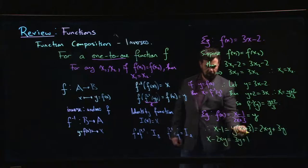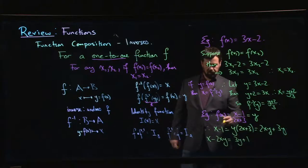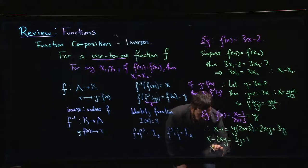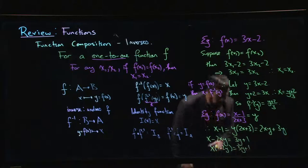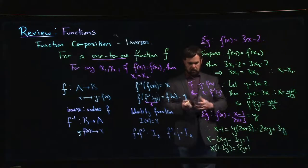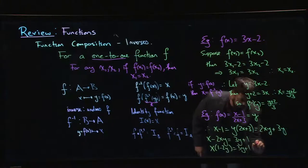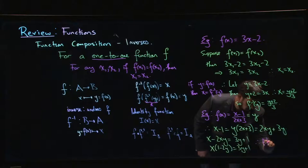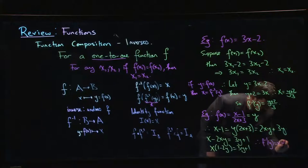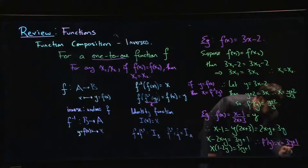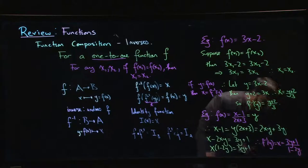Okay. So I want to solve for x. Next thing I should do is I should factor an x out from this left-hand side. x times 1 minus 2y is 3y plus 1. And so if I want to solve for x, I just have to divide by 1 minus 2y. So f inverse of y, which is x, is 3y plus 1 over 1 minus 2y. And there you have it.